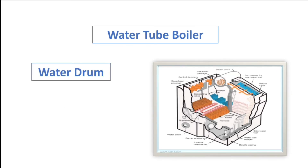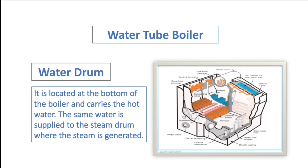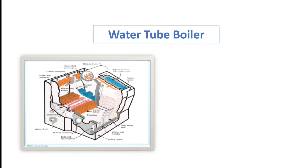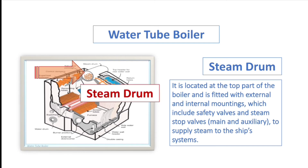The water drum is located at the bottom of the boiler and carries the hot water, which supplies the same water to the steam drum where the steam is generated. The steam drum is located at the top part of the boiler and is fitted with external and internal mountings, which include safety valves and a steam stop valve to supply steam to the ship's systems.